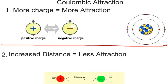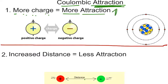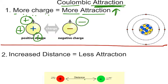Now before we get into the trends, we have to look at an important factor that affects those trends, and that is called coulombic attraction. We normally say just attraction for short, but the official name is coulombic attraction. It has two simple rules that go with it. If you have more charge — if I have more positives and I have more negatives — the attraction between them will be stronger, and there will be a stronger pull together.